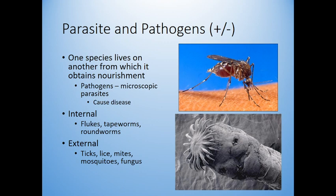Parasites and pathogens represent another positive and negative interaction — one species living on another for nourishment. This includes bacteria living on your skin or in your gut, tapeworms, or even mosquitoes. The life cycles of these parasites are often really interesting, requiring them to jump from host to host across different species to complete their life cycle.